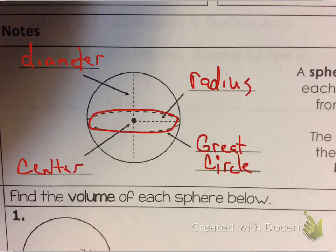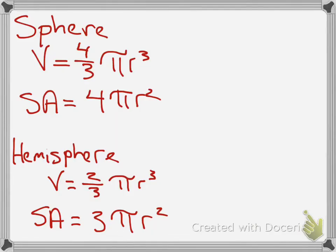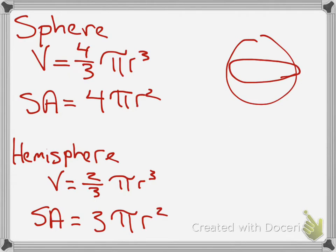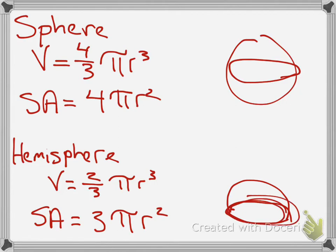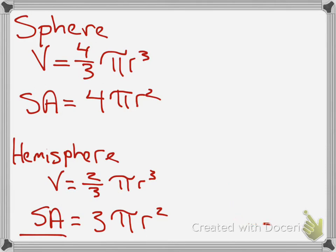Here are the basic formulas. You have πr³ and πr² — for sphere volume it's four-thirds πr³. For a hemisphere, the volume is two-thirds πr³ because it's half of a sphere. But the surface area is not quite half — a hemisphere has 3πr² because it still has the great circle part making up that surface area, which is why it's three πr² rather than two πr².